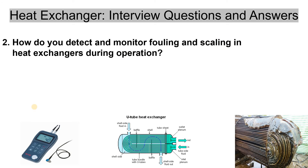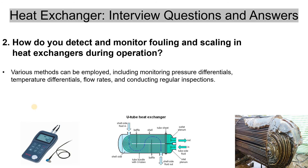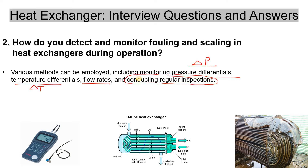The next question is: how do you detect and monitor fouling and scaling in a heat exchanger during operation? There are various methods that can be employed. Mainly these include monitoring the pressure differential — if delta P increases, that could be one indication — then delta T could be another indication, along with flow rate and conducting regular inspection. Monitoring delta P, delta T, and flow rate all come under regular inspection.